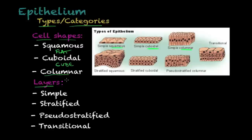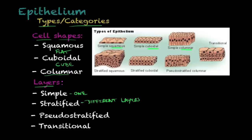The other criterion is the number of layers. You can find epithelial cells in a simple layer, meaning one layer only — for example, simple squamous means one layer of flat epithelial cells. You can also find them in stratified form, meaning different layers — for example, stratified squamous means different layers of flat epithelial cells.